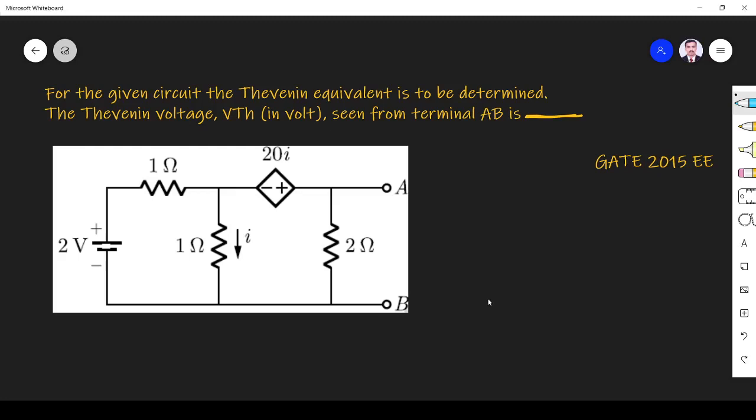Hi friends, in this video let us solve a network theory related question asked in GATE 2015 EE paper. The question is: for a given circuit, the Thevenin equivalent is to be determined. The Thevenin voltage VTh seen from terminal AB, so across this we have to find VTh.